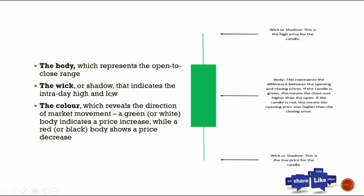Now let's look at the wicks, also called shadows. These indicate the intraday highs and lows. The upper wick represents the higher price of the candle, and the lower wick represents the lower price of the candle.